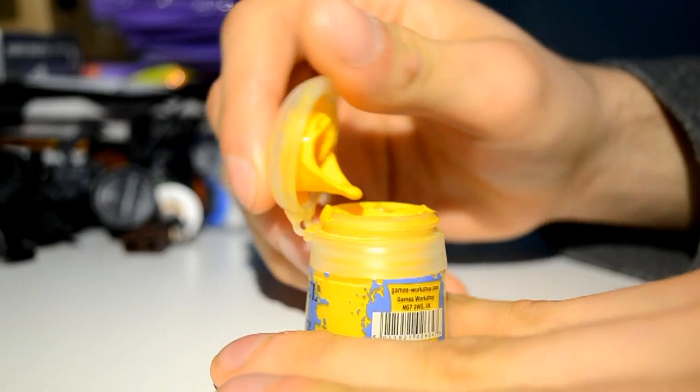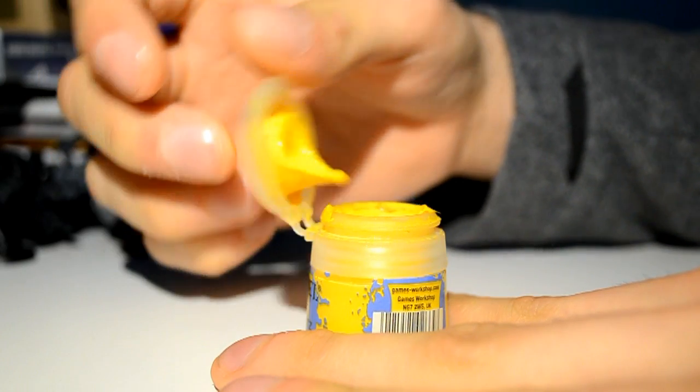So if you have a paint pot and the lid just keeps trying to close like this, like it doesn't have at the back by the hinge the little piece of plastic which usually hooks to hold it open.